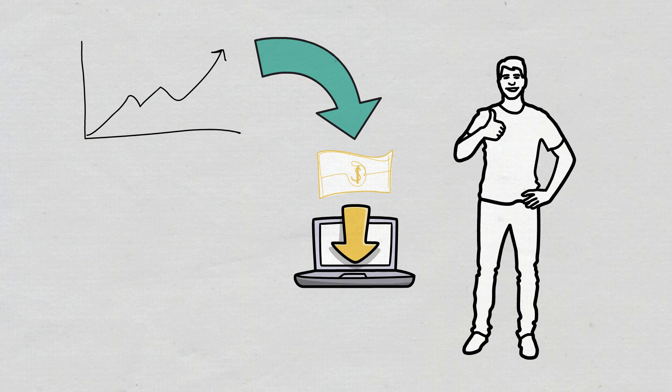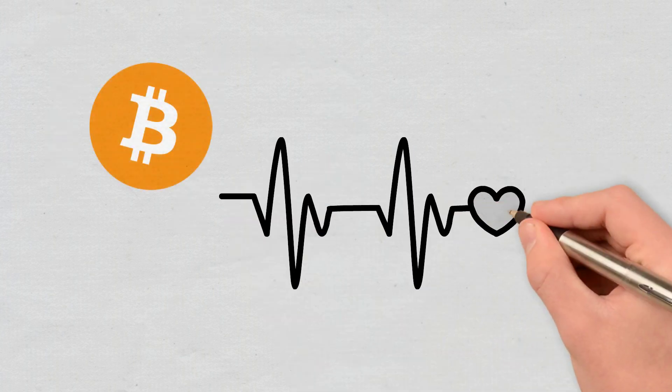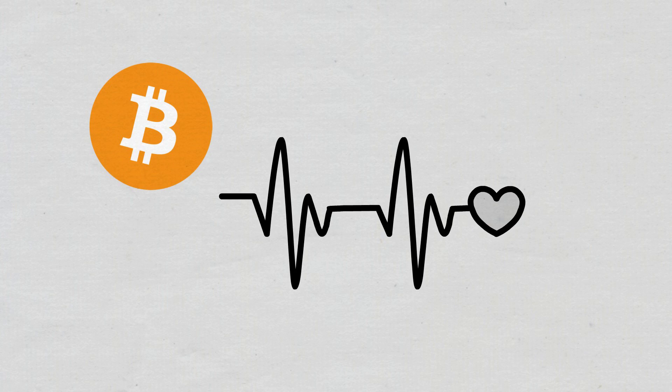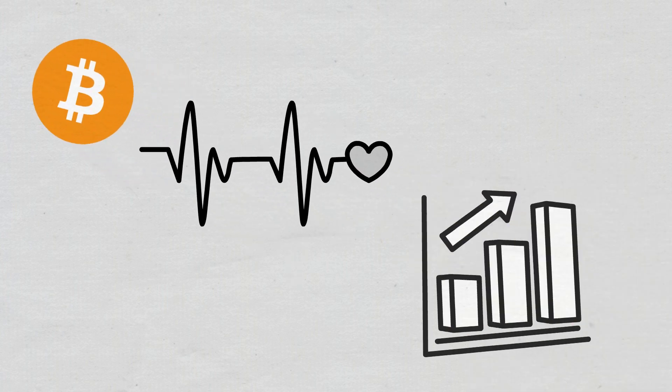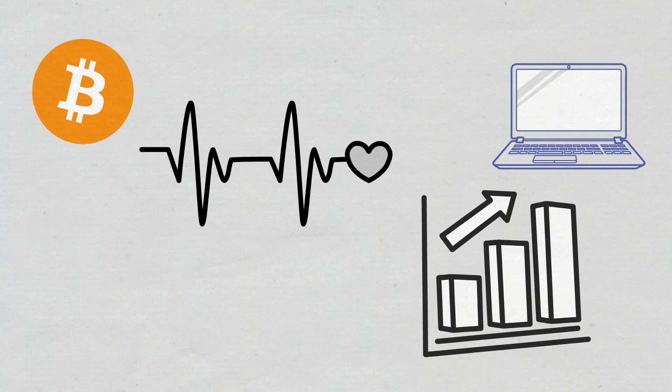The Bitcoin Hashrate is seen as being a health signifier for the network. If the Hashrate is higher, it means that the processing power is also high, which in turn also means a higher level of security.